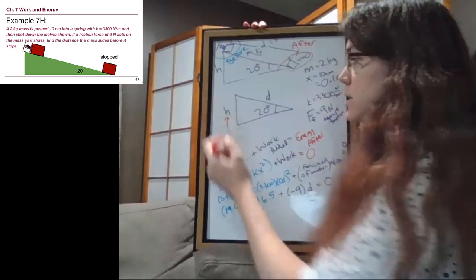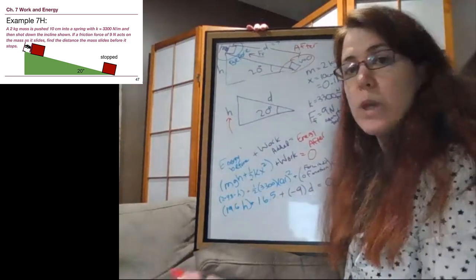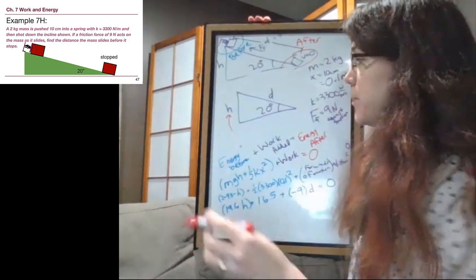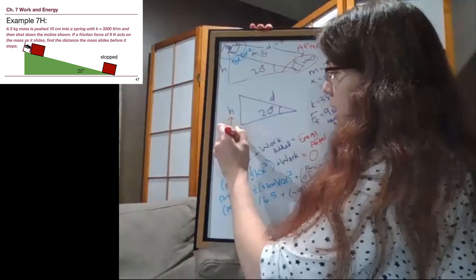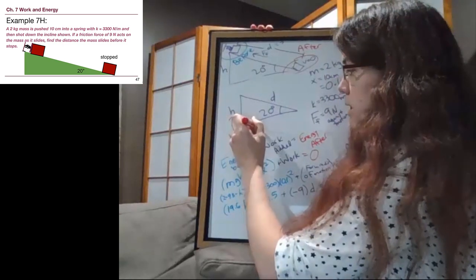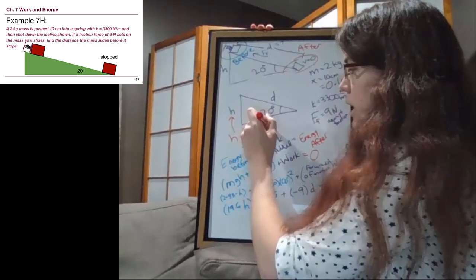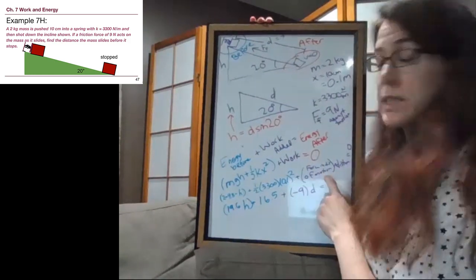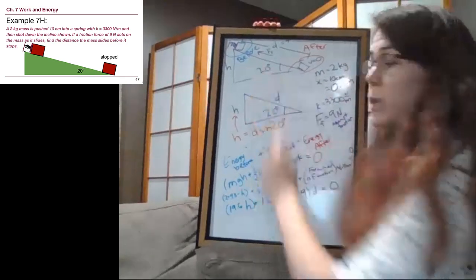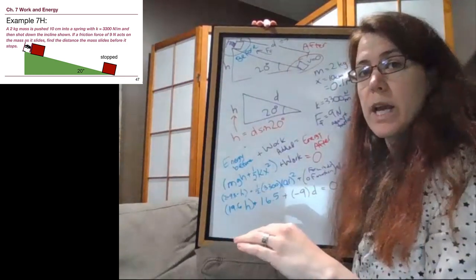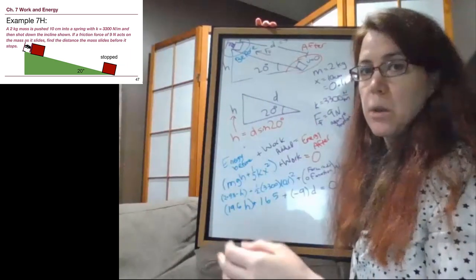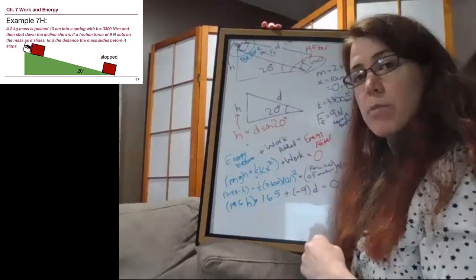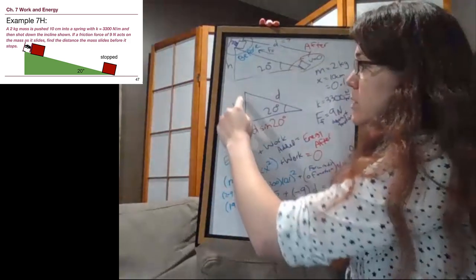I'm going to use red just so we can see it. We can actually write instead of just height H, we can go back to our understanding of trigonometry that we've been building since chapter 3, and write that that height is really the hypotenuse D times the sine of the angle, 20 degrees. Now notice something important here. The work term did not care at all about that 20 degree angle. The work term is just looking at how the force and the motion compare to each other, and that was along the ramp.